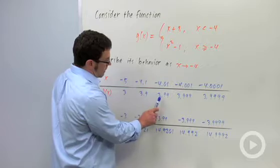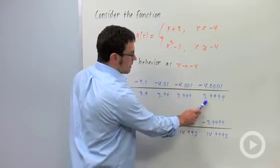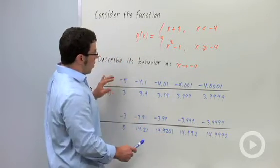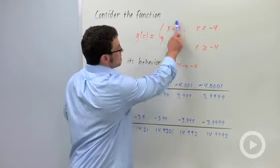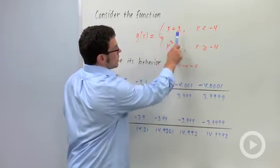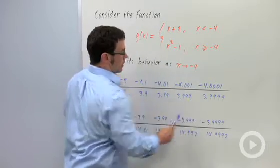We get 3, 3.9, 3.99. These values are getting closer and closer to 4. When x is less than negative 4, we're using this piece of the function. So we're getting closer and closer to the value 4.